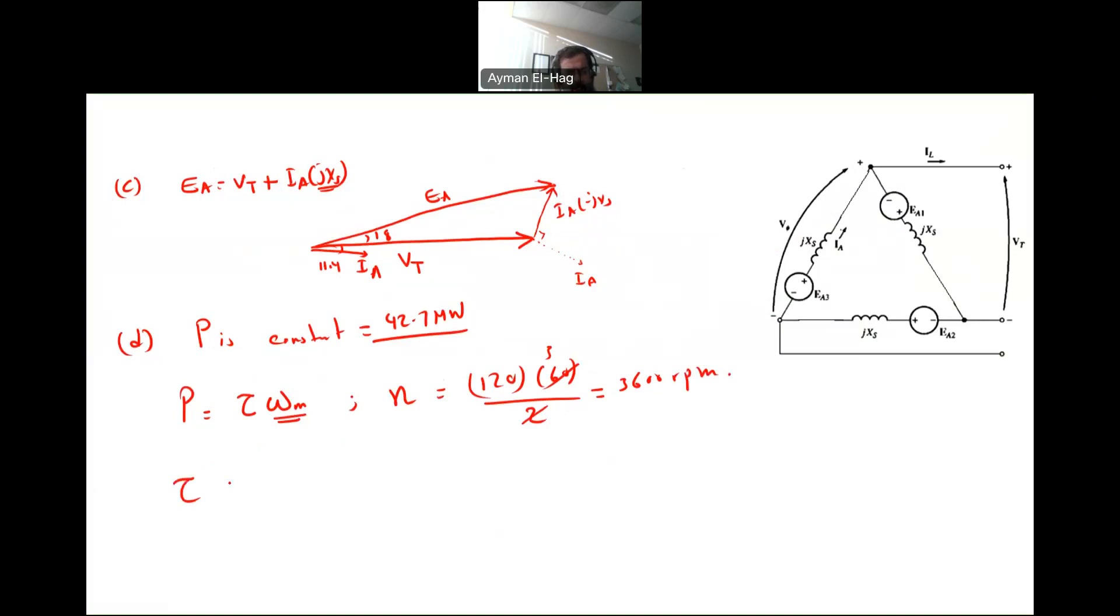So the torque will equal to the power, which is 42.7 megawatt, or times 10 to the power of 6, divided by the speed, 3600 times 2 pi over 60 to change the speed into omega. And this will give me a total torque equal to 113,300 Newton meter.